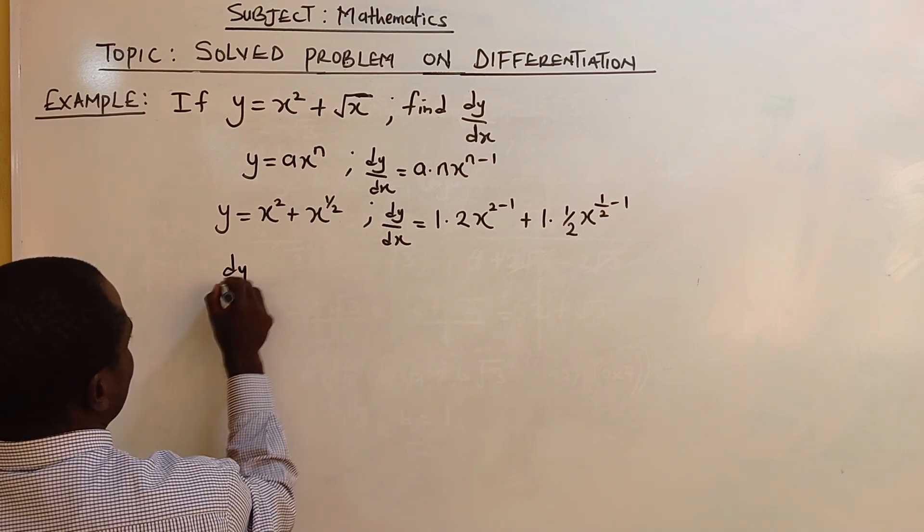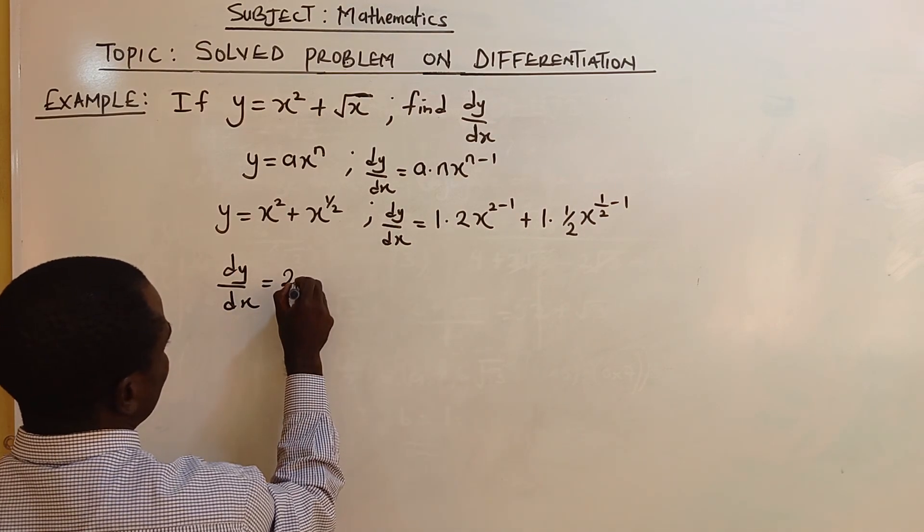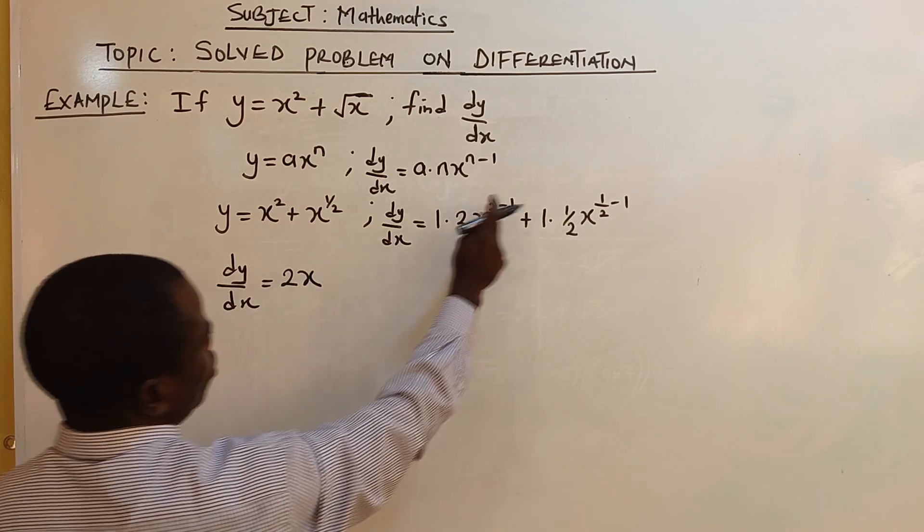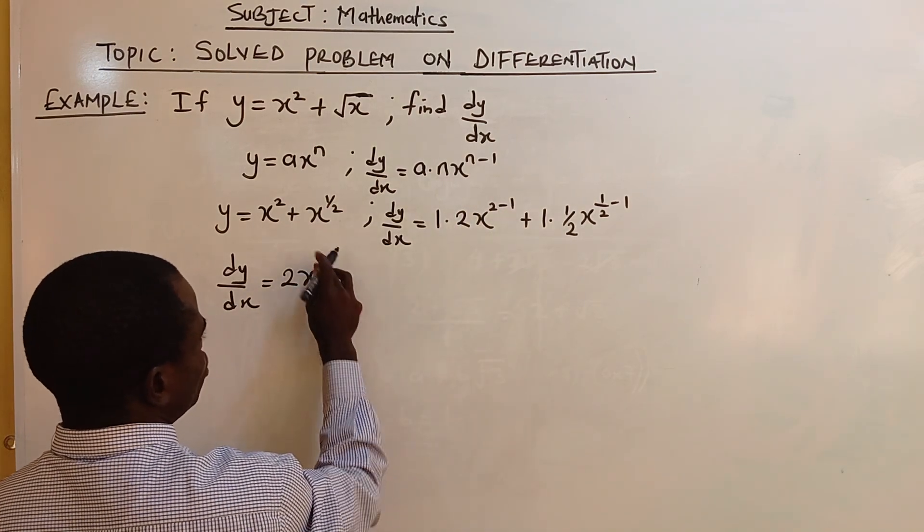Now, dy/dx equals 1 times 2, you have 2x. 2 minus 1 is 1. You don't need to put 1 there.